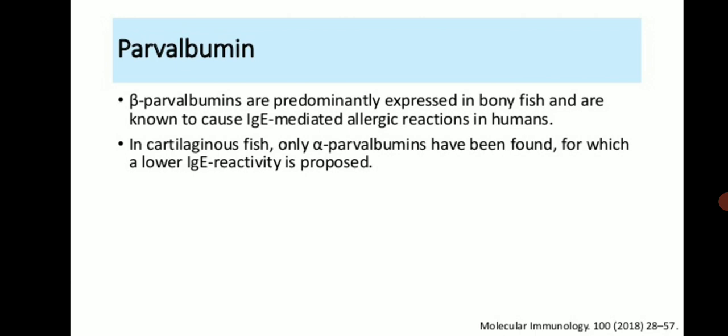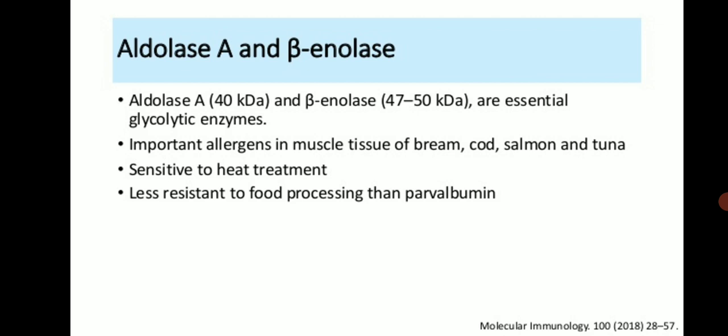Aldolase A and beta-enolase are essential glycolytic enzymes — aldolase A at 14 kilodaltons and beta-enolase at 47 to 50 kilodaltons. They are important allergens in the muscle tissue of bream, cod, salmon and tuna, and are sensitive to heat treatment, showing less resistance to food processing than parvalbumin.